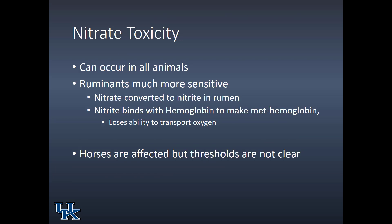Nitrate toxicity can occur in all animals, but ruminants are much more sensitive. The nitrate present in plants, once it reaches the ruminant, is converted to nitrite. That nitrite binds with hemoglobin to make methemoglobin. The iron molecule at the center of every hemoglobin molecule that transports oxygen is normally in the plus-two or ferrous state. When nitrite binds with hemoglobin to make methemoglobin, it flips that iron to the plus-three or ferric state, and in this state it cannot transport oxygen. Animals then die of asphyxiation, and rather quickly.